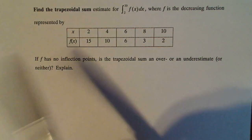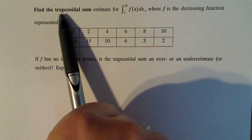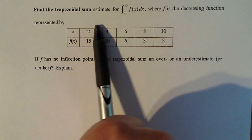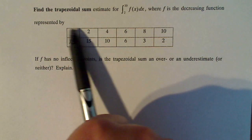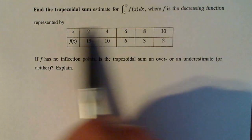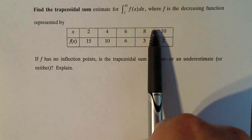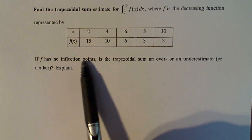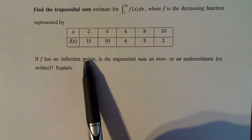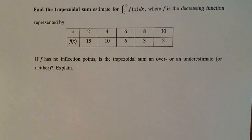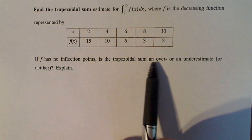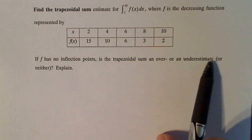We have a chart and the problem asks us to find the trapezoidal sum estimate for the integral from two to ten of f of x dx, where f is the decreasing function represented by this chart. Part two says if f has no inflection points, which means it's either solely concave up or solely concave down, and we know it's just solely decreasing, is the trapezoid sum an overestimate or an underestimate or neither?